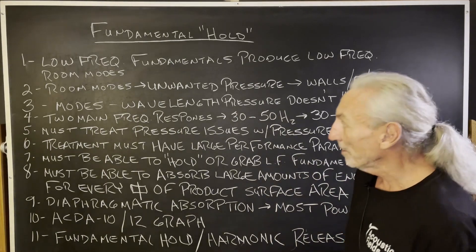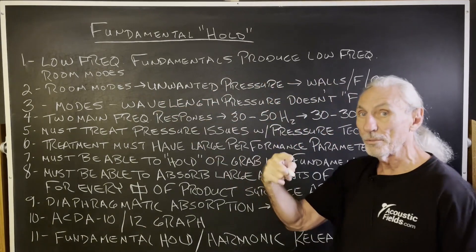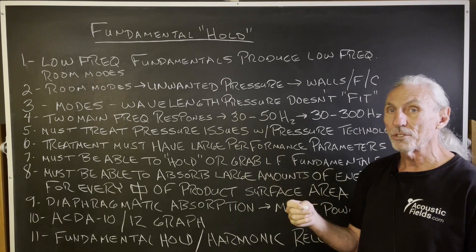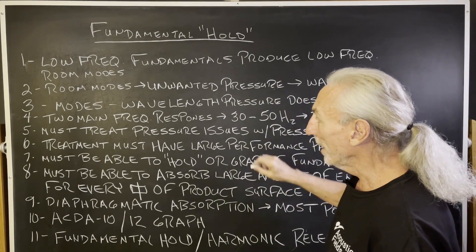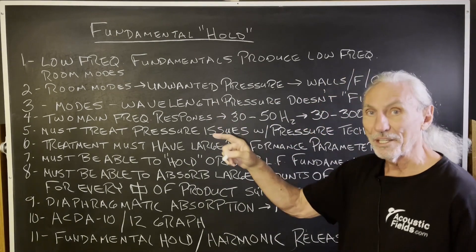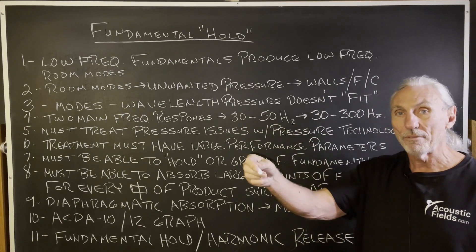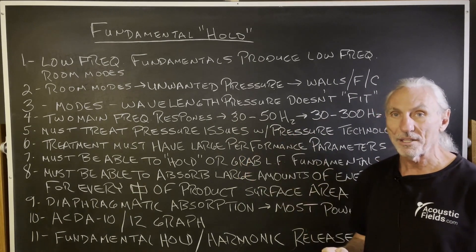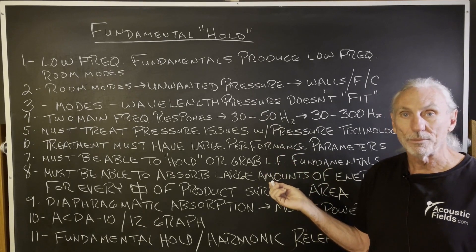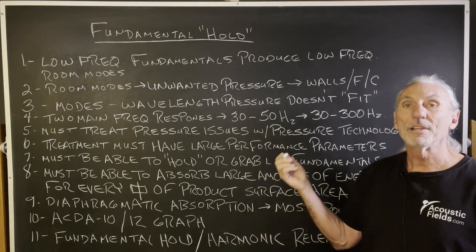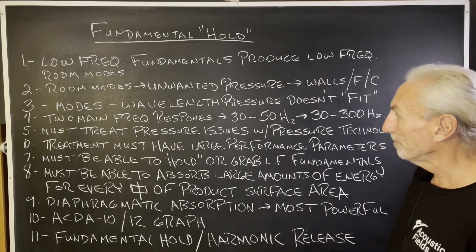Low frequency fundamentals produce low frequency room modes. We know what room modes are — unwanted pressure between two surface areas, four surface areas, and six surface areas. We don't want it. It's distortion. Basically, the 30, 40, 50, 60, 70, 80 hertz wavelengths won't fit in a room. That's the easiest way to think about it. 40 hertz is about 28 feet — who has 28-foot rooms? So if it doesn't fit, just think distortion, or think room modes. That's what it is.